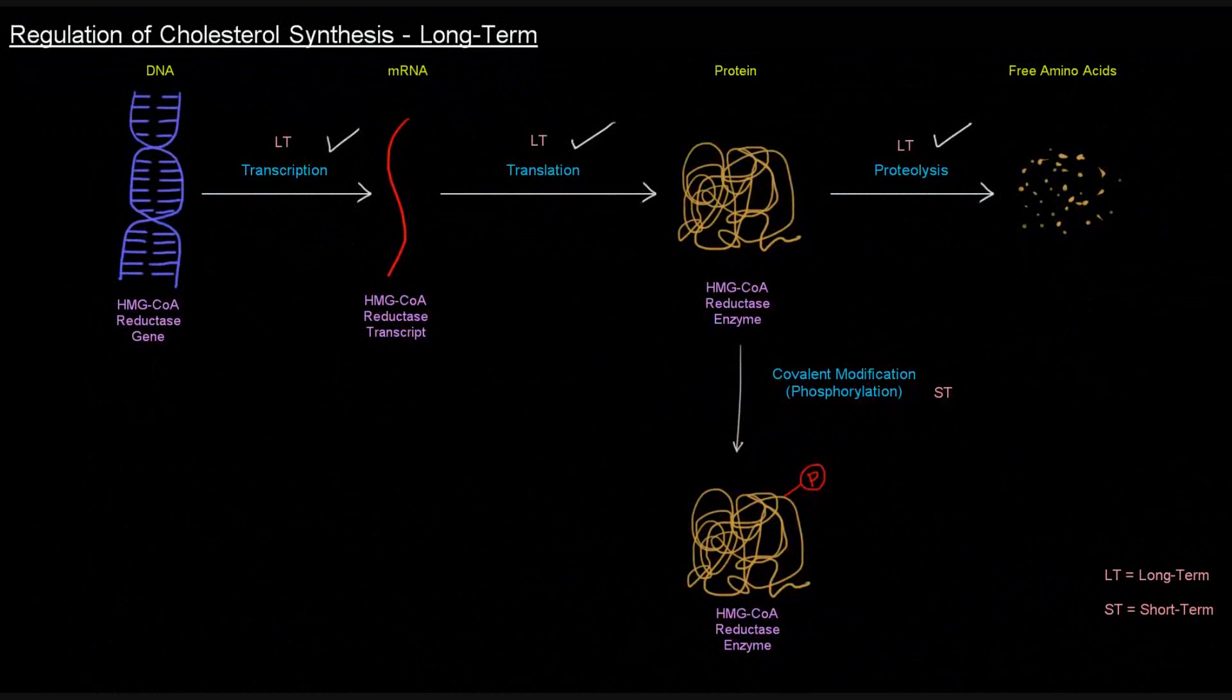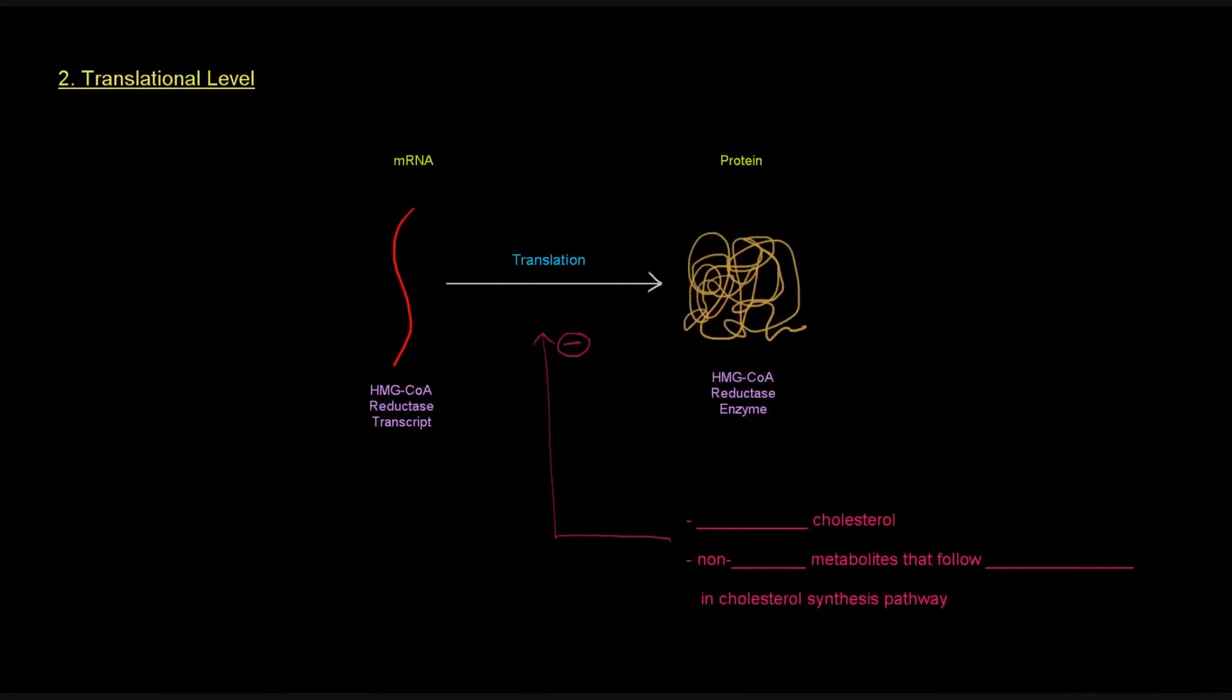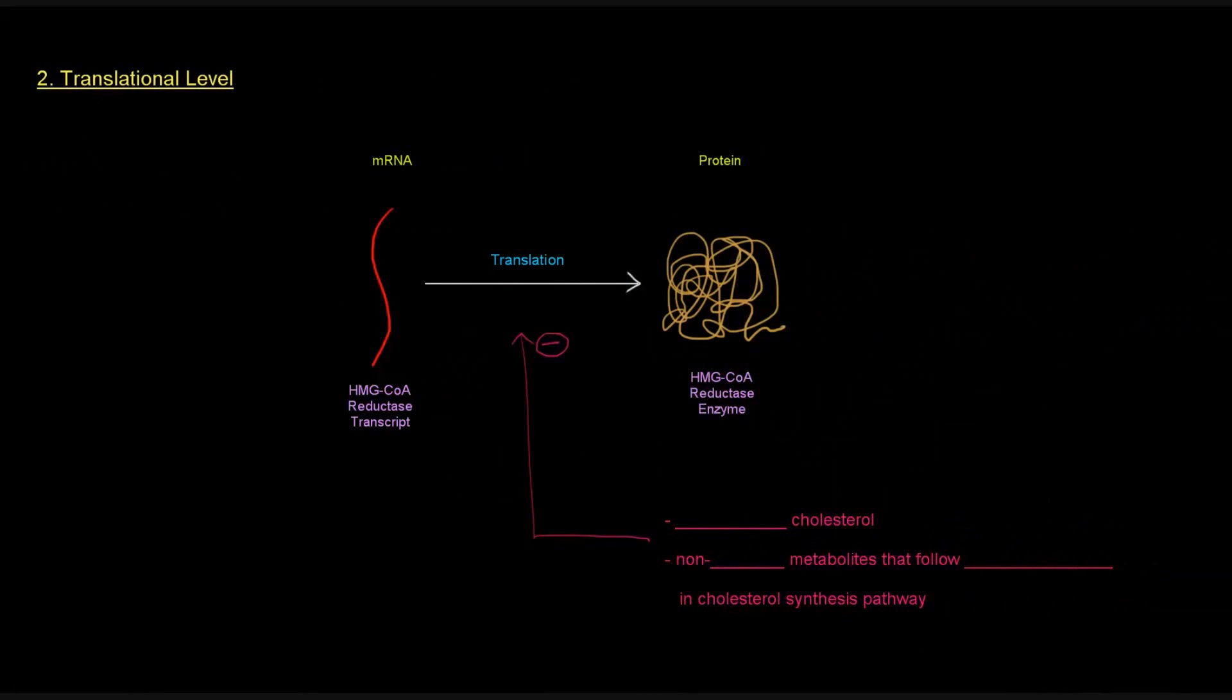Let's look at the translational level and the proteolytic level, starting with the translational level. So translation, basically, we're just going to take this reductase transcript and translate it to the actual enzyme, the protein. This is inhibited by a couple things. It's inhibited by dietary cholesterol. That should make sense. It's just the idea that if we've already got cholesterol, let's not make this enzyme that will make more of it.